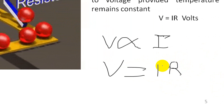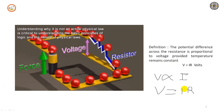Ohm's law is also defined as the resistance which permits the flow of one ampere of current when a potential difference of one volt is applied to the resistance. All we need is a resistor and a voltage, and then the current flows in a closed circuit. Remember, current only flows in a circuit which consists of a resistor when it is a closed loop.